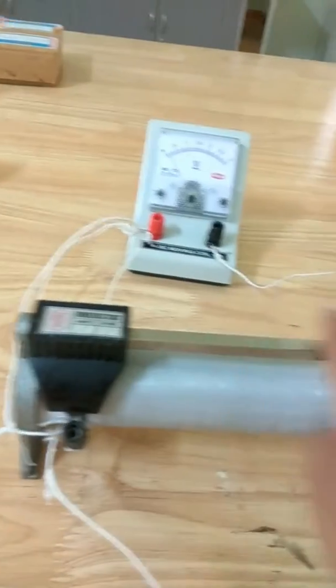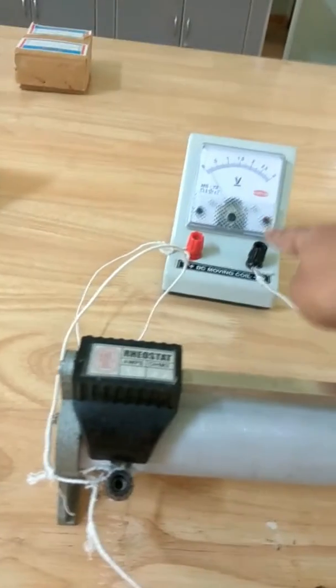Now we will see that when we move this jockey from left to right, there will be a change in this voltmeter.